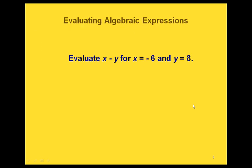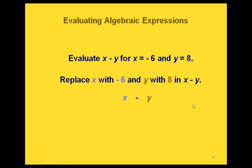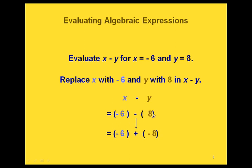We also need to think about evaluating algebraic expressions. For example, if we want to evaluate x minus y when x equals negative 6 and y equals 8, we replace x with negative 6 and y with 8 in the expression. We write the parentheses and substitute the values. That gives us negative 6 minus 8, which we rewrite as negative 6 plus negative 8, and the final answer is negative 14.